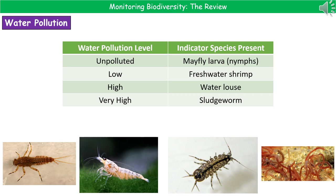There are four key groups of indicator species for water pollution. If the water is unpolluted, we find mayfly larvae — the little nymphs. In low levels of pollution we find freshwater shrimp. In high levels of pollution we find the water louse, and in very high levels of pollution we find the sludge worm. You can use their names as a hint: sludge worm — sludgy — lots of pollution. A louse is generally associated with dirty things, so again high pollution. The mayfly is in nice clean water, and the freshwater shrimp is in low levels of pollution.